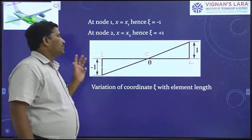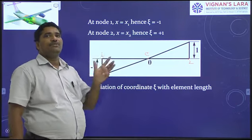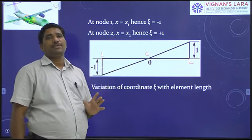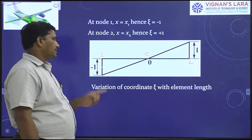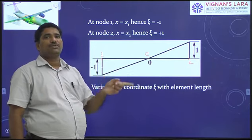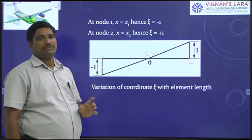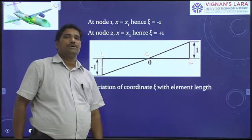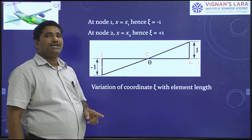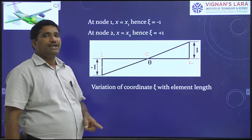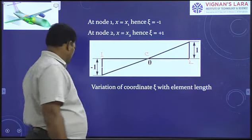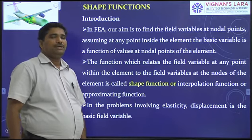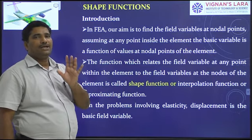The properties of the natural coordinate ξ are: its value varies from −1 to +1; the length of the element is covered as ξ varies from −1 to +1; ξ is used for one-dimensional problems; it is a derived coordinate and a local coordinate; and it is used to derive the properties of the element.